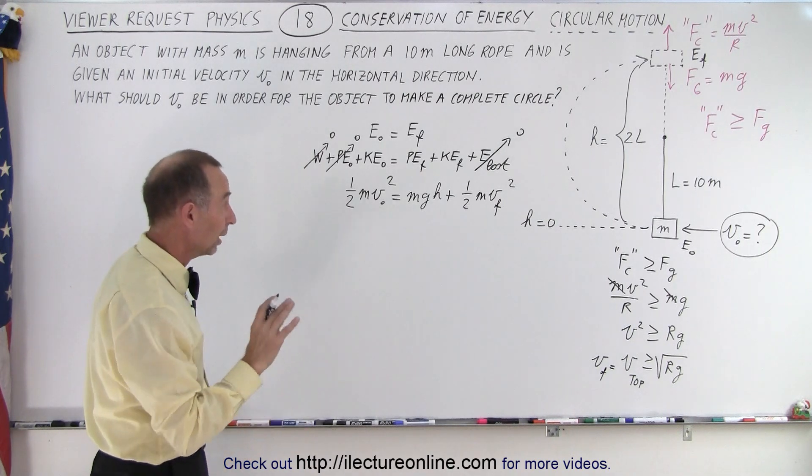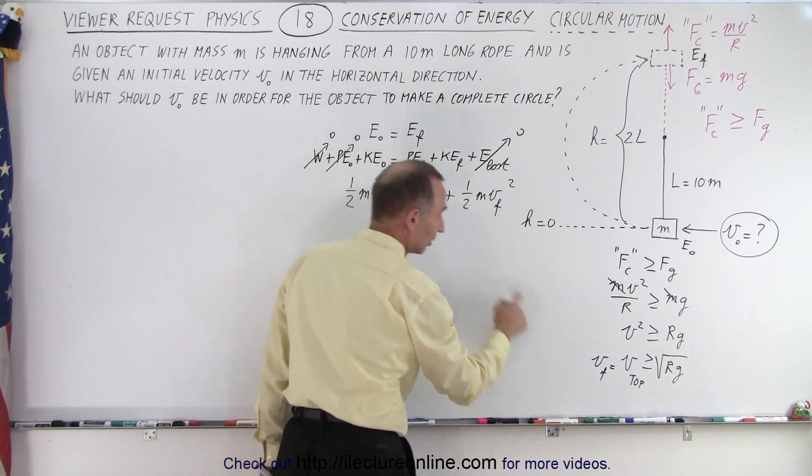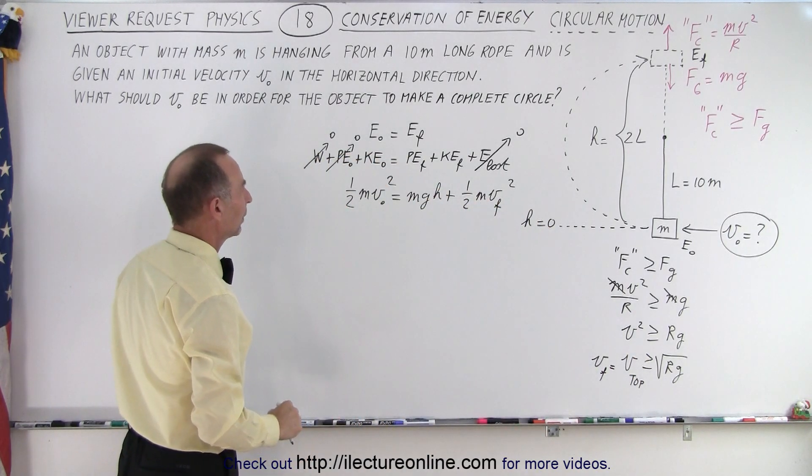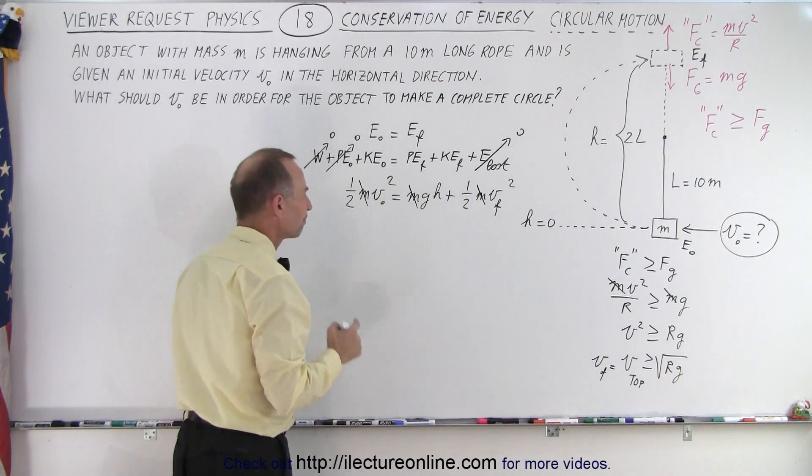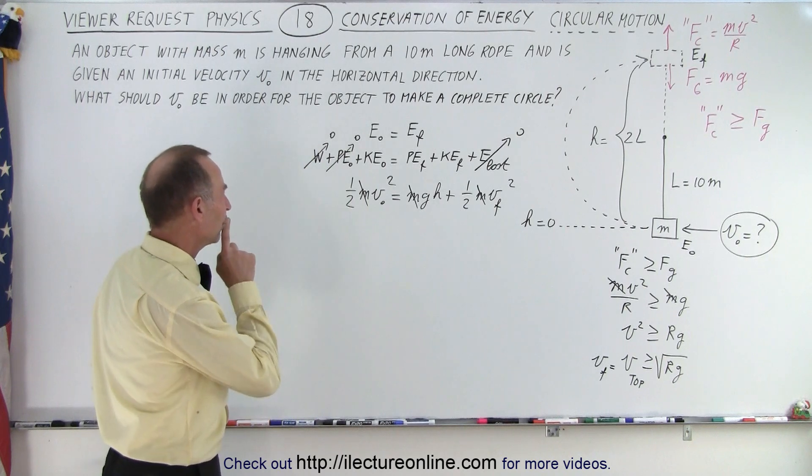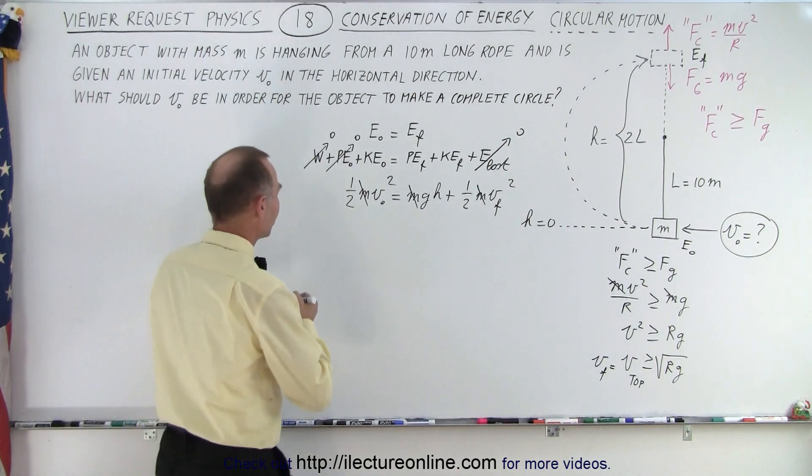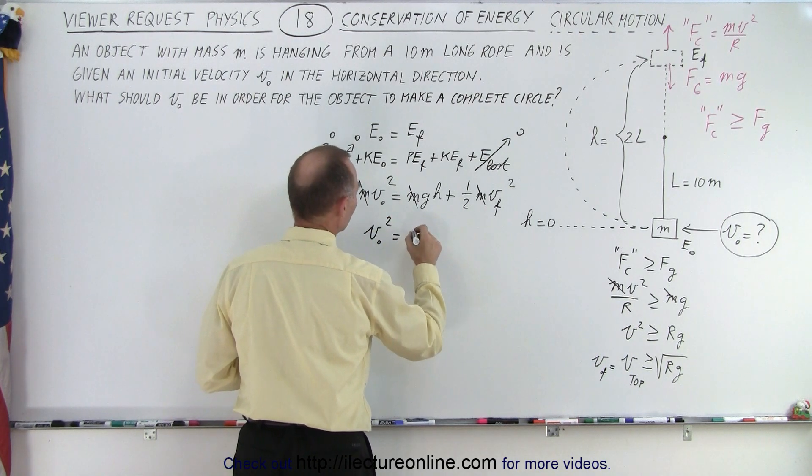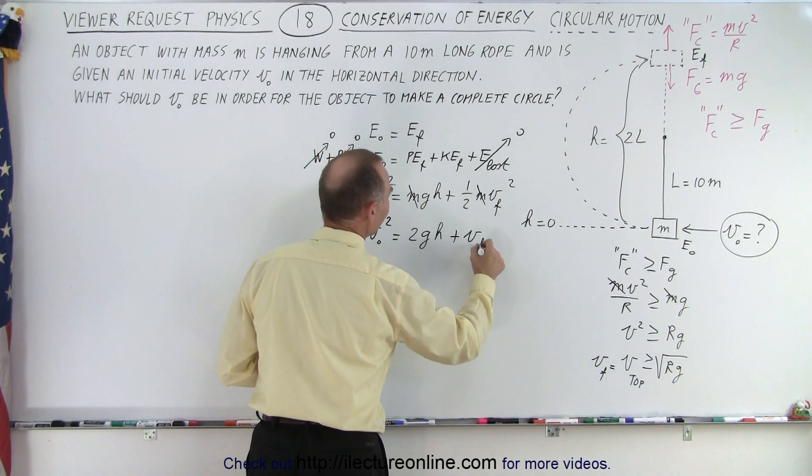We're not looking for that. We're looking for V initial and V final can be of course replaced by what it's equal to. When I look at that equation again I can get rid of all the M's. I don't need to know the mass. At this point we should multiply everything by two to get rid of the one half. So let's do that. So in that way we get V initial squared equals 2GH plus V final squared.